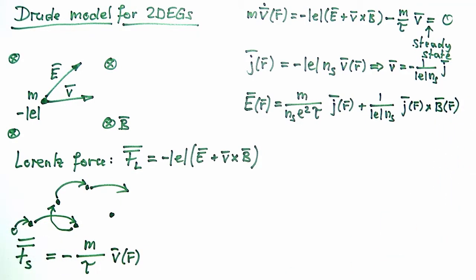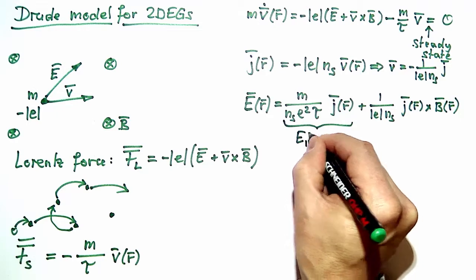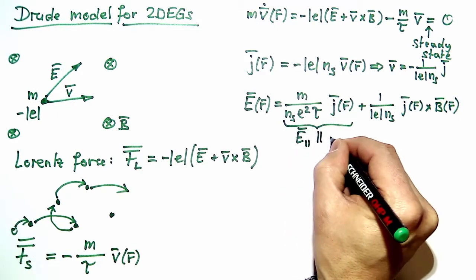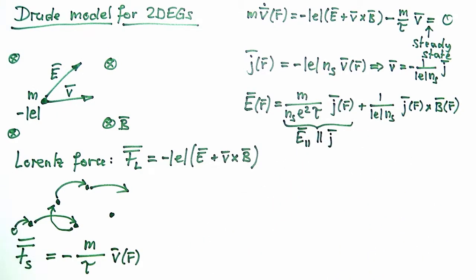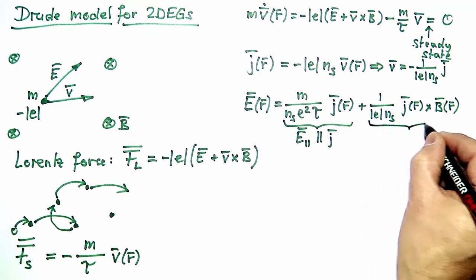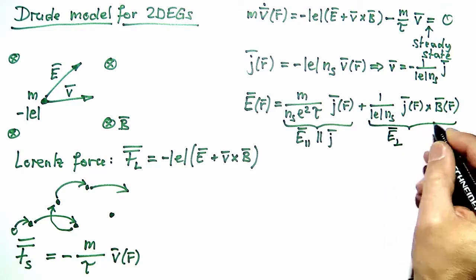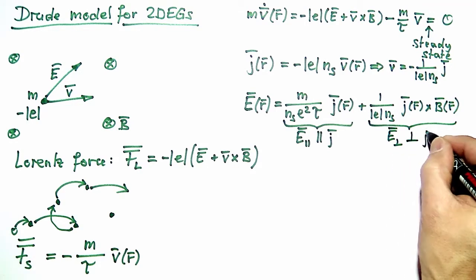Looking at this expression, the in-plane electric field has two components. One is parallel to the current — we call it E parallel — and the second one is perpendicular to the current — we call it E perpendicular.